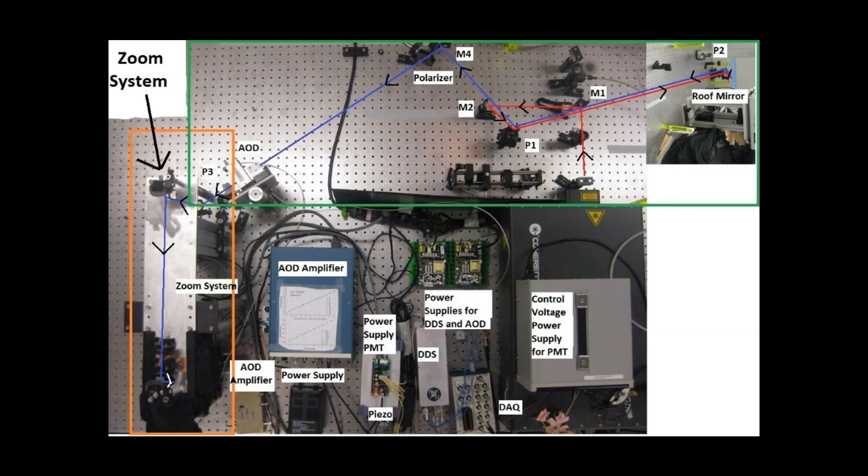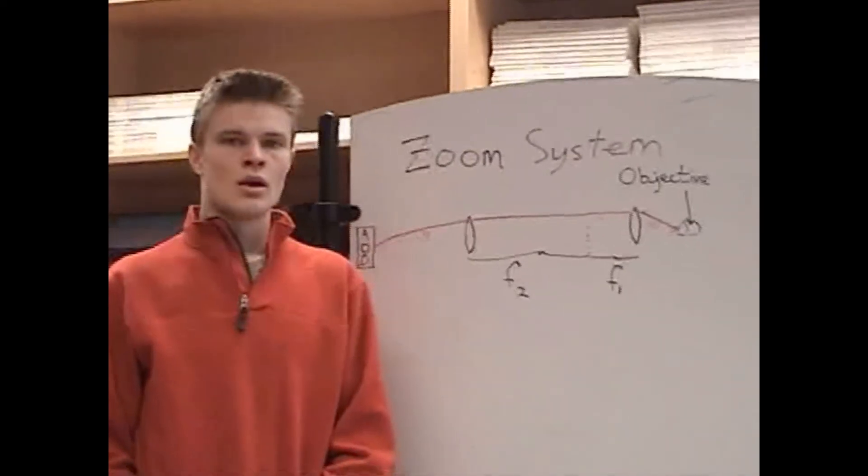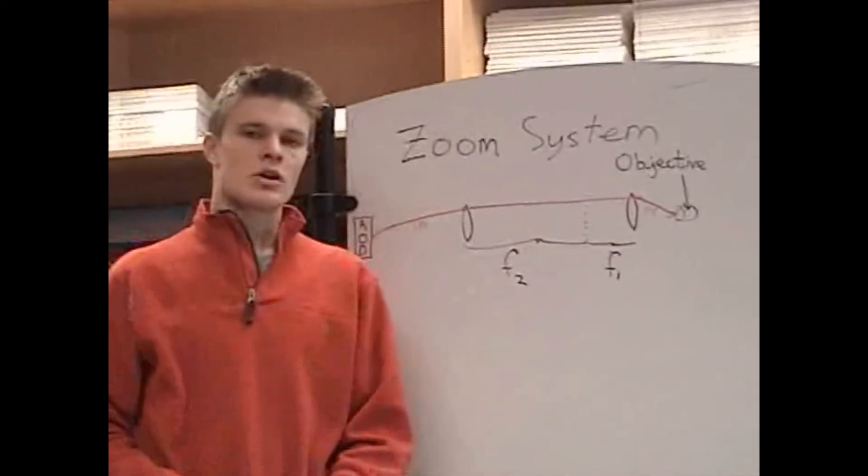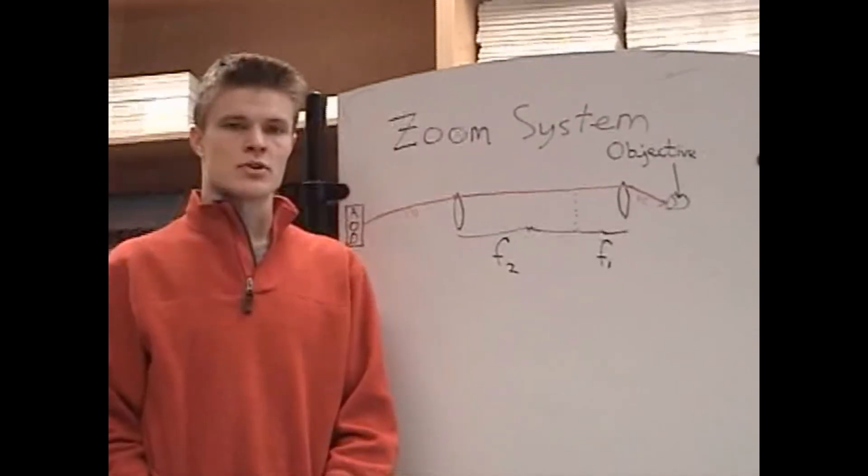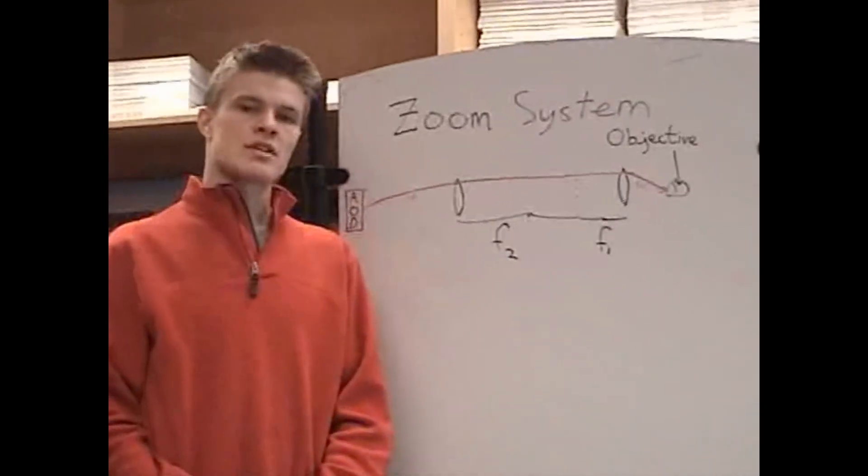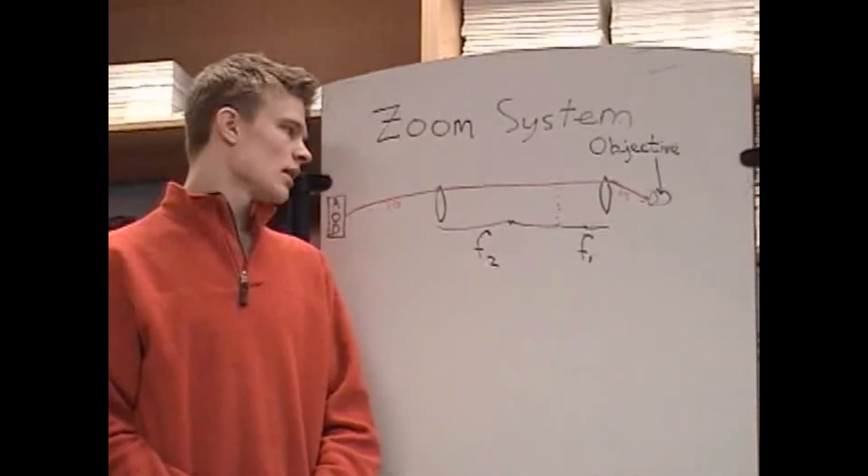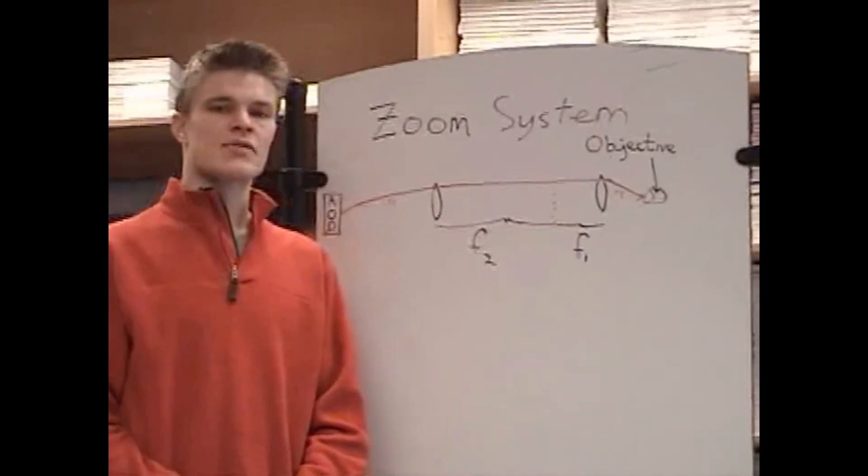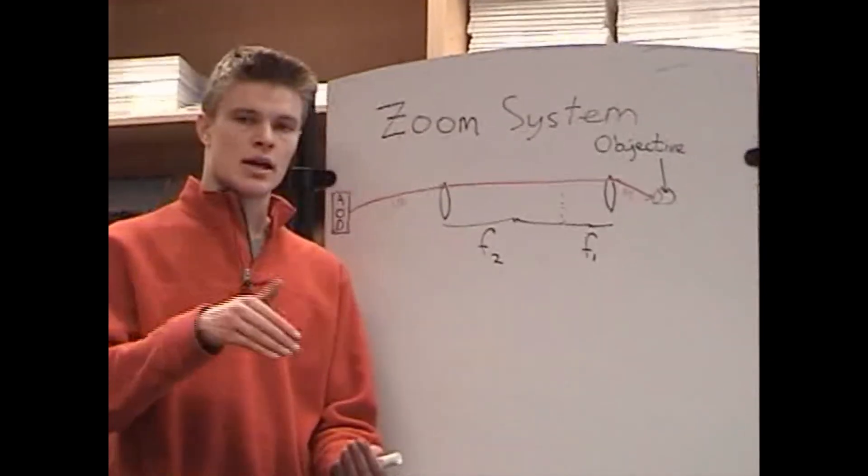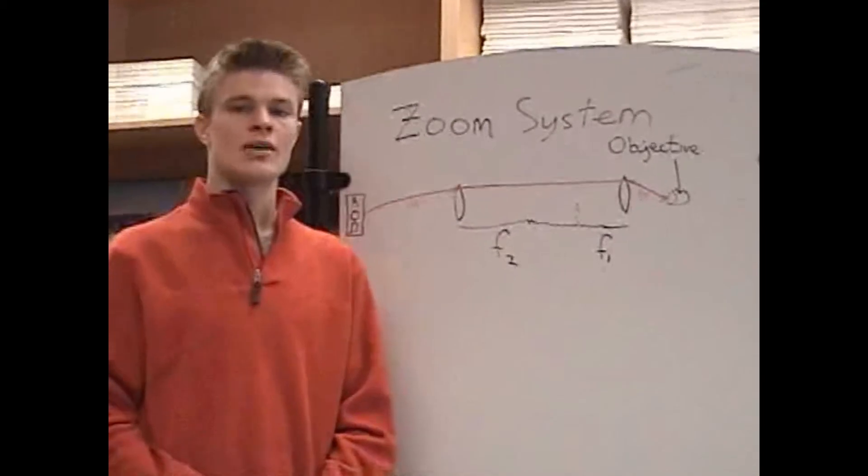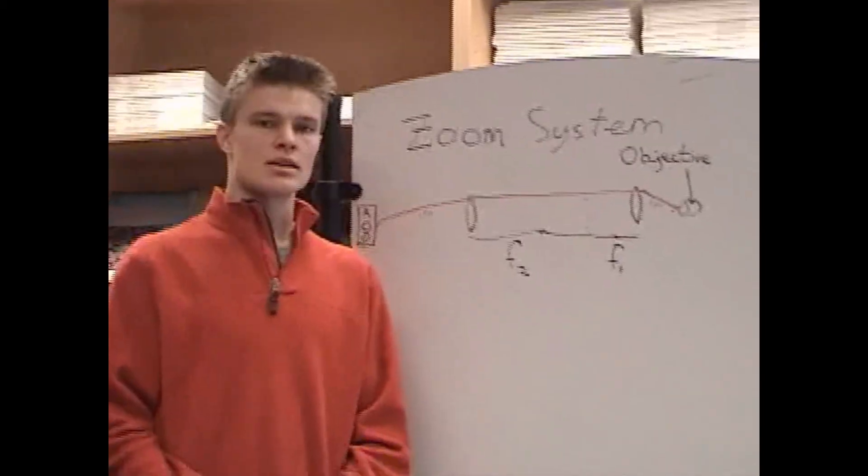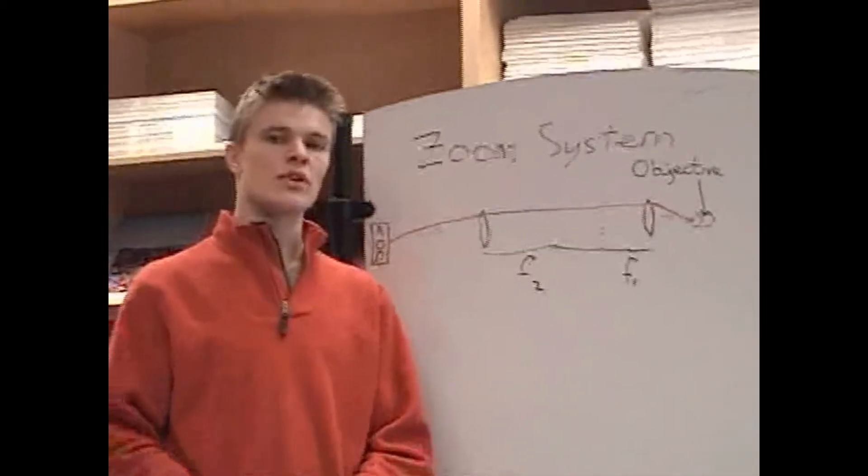The zoom system located on the left side of the picture is used to increase the field of view of the objective. Here is a schematic drawing of the zoom system of our microscope. The zoom system allows us to increase the angle of the laser that is exiting from the AOD and entering the back aperture of our objective lens. This helps us to increase the field of view.